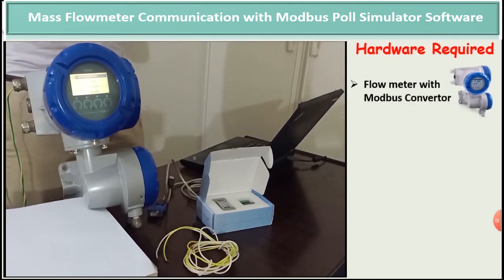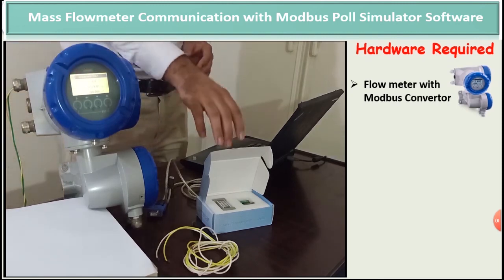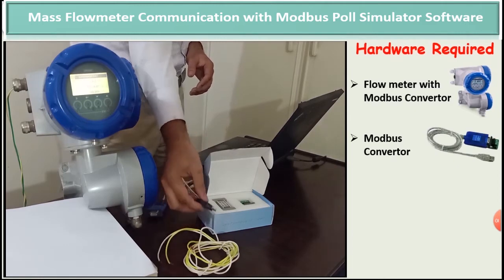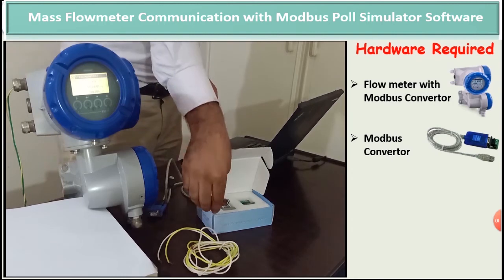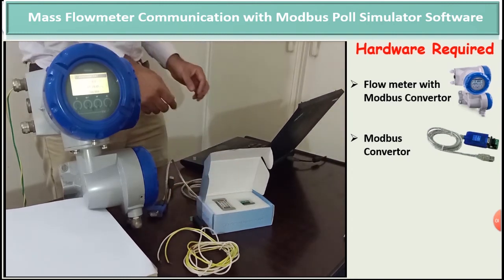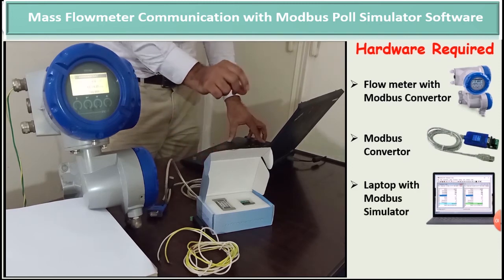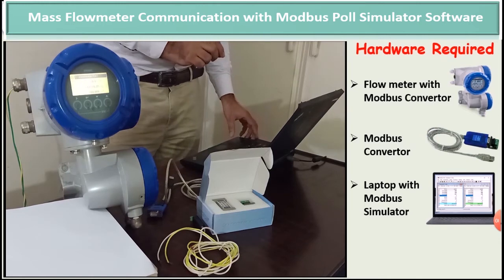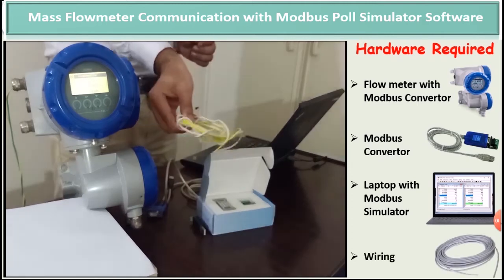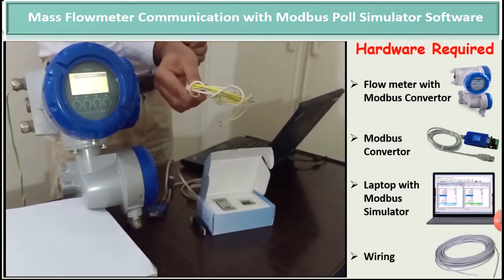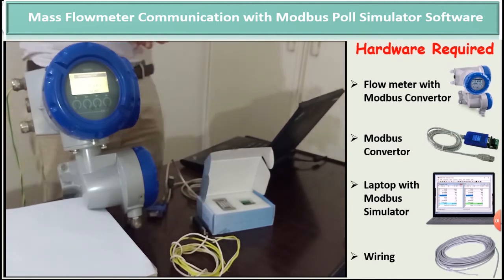The first requirement is the flow meter with the Modbus converter card installed. The second requirement is the Modbus converter, which basically converts the electrical Modbus signal to a digital signal. The third requirement is a laptop or PC with installed Modbus simulator software and the driver of the Modbus converter. The fourth and last requirement is the wiring used for the connection of the Modbus signal points from the flow meter to the Modbus converter.